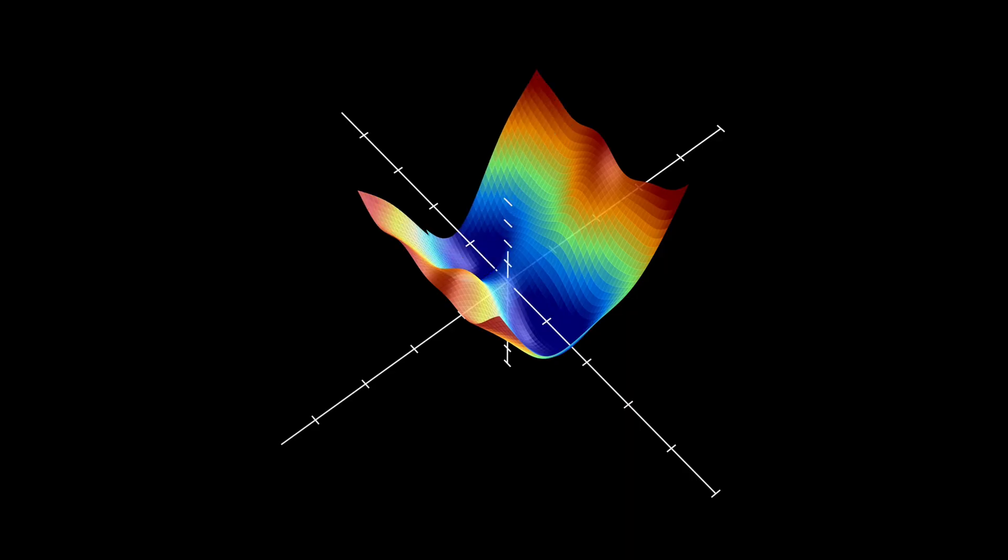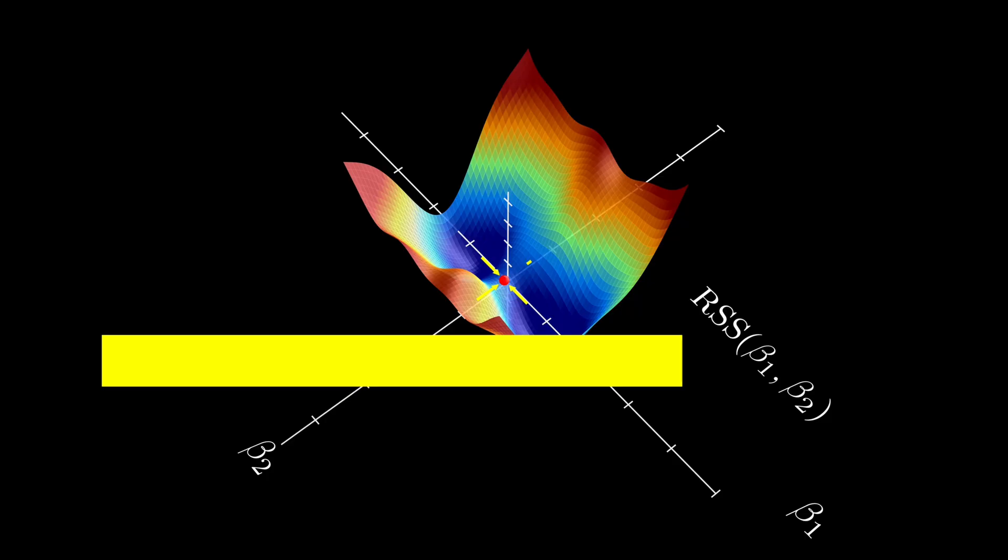Second, we have the issue of saddle points and plateaus. A saddle point is a point where the gradient is zero, but the point is neither a minimum nor a maximum. In high dimensions, saddle points are actually much more common than local minima.